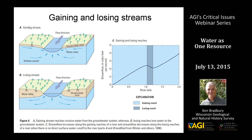Streams can be gaining or losing. A gaining stream is one where groundwater is flowing into the stream, maintaining and increasing its flow. In contrast, a losing stream has a water table below the level of the stream, so water leaks out of the stream into the groundwater system. A plot of streamflow versus distance downstream shows a slight decrease in flow through a losing reach, which can also be caused by a nearby well pulling water out of the stream.